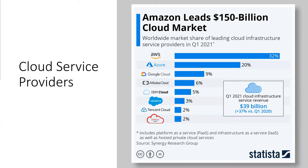Now let's look at the cloud providers. From a Statista infographic, as of Q1 2021, AWS is the leading cloud provider with 32% market share. Azure comes second, and Google Cloud is third. There are others too — Alibaba Cloud, IBM Cloud, Salesforce, Tencent, and Oracle Cloud. This data includes both IaaS and PaaS services offered by these companies.